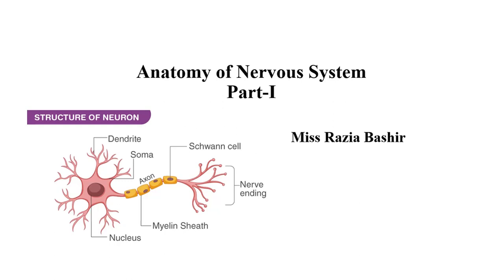We start with the structure of a neuron. In this diagram, you can see a structure with a body and soma, and the finger-like projections are known as dendrites. Between the body there is a nucleus, and this long structure is known as the axon. The outer covering is the myelin sheath, and the axon is formed by Schwann cells.